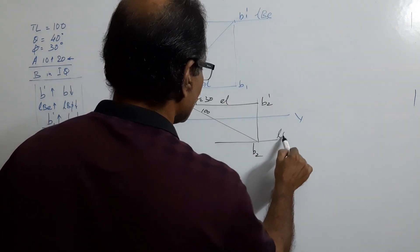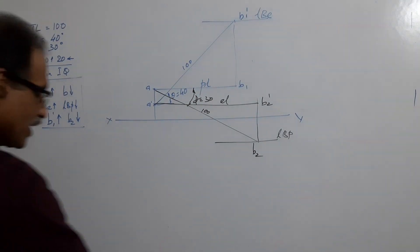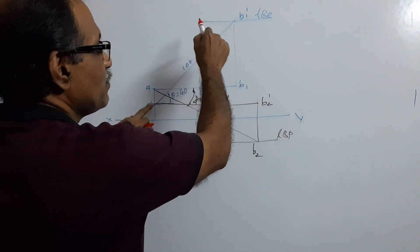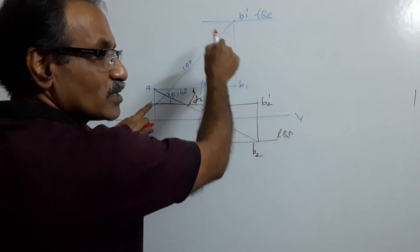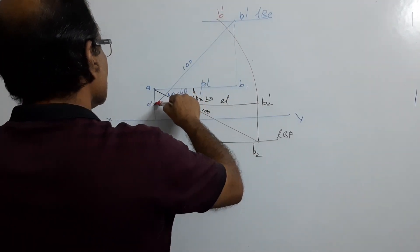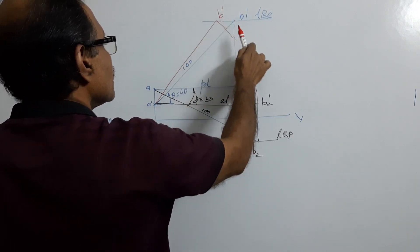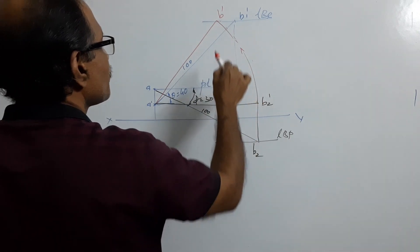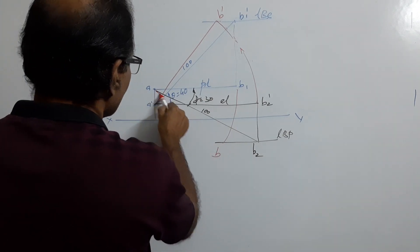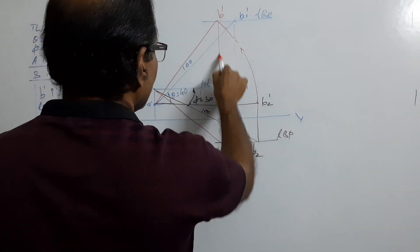Draw a vertical projector up through b2 and draw a horizontal line through A-dash to get b2-dash — this is called the elevation length, and this locus is called lbp. Now combine them: with A-dash as center and elevation length as radius, draw an arc on lbe to get b-dash, which is the final elevation. With A as center and plan length as radius, cut an arc — b is the final plan. A projector through b-dash will pass through b.